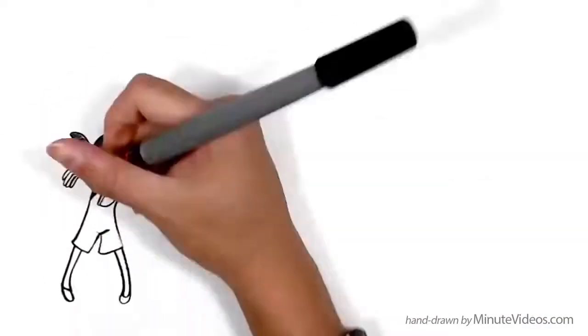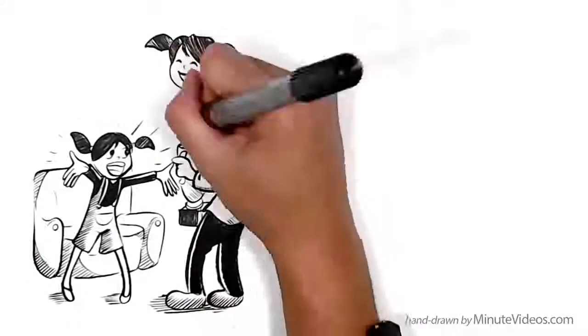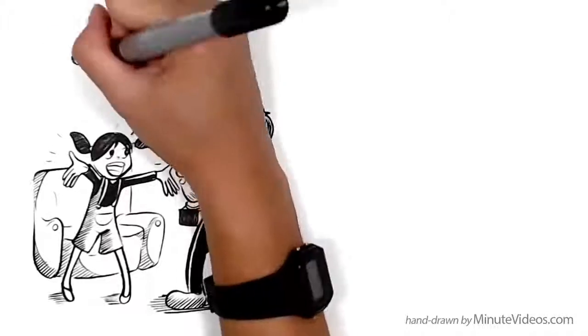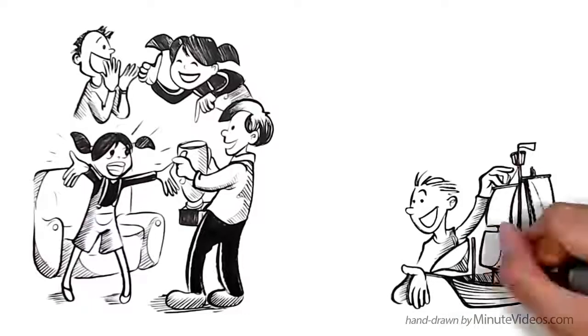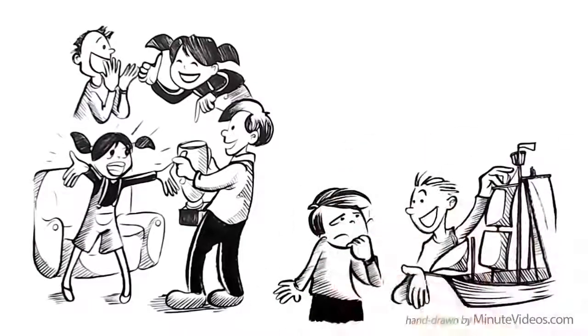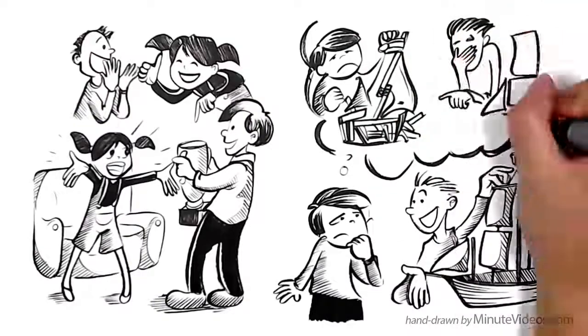Ann likes to see others succeed. It inspires her. She knows that if she motivates her friends to get better, she herself is likely to grow too. If his friends try new things and succeed, Jay feels threatened. He's afraid that their success will put pressure on him to do more with his life too.